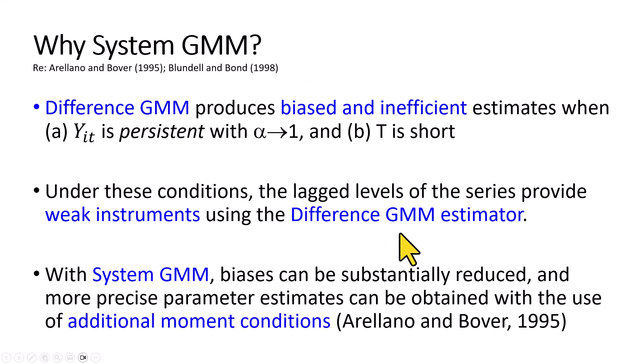In their 1998 paper, Blundell and Bond, extending the 1995 work by Arellano and Bover, determined that difference GMM produces biased and inefficient estimates when the series is persistent and the time period is short, and that under these conditions, the use of the lagged levels of the series as instruments provides weak instrumentation.